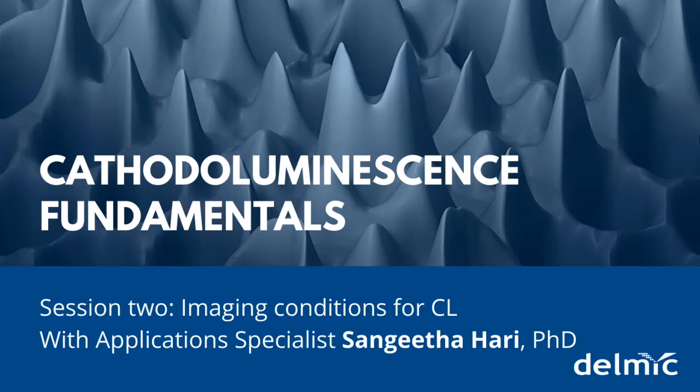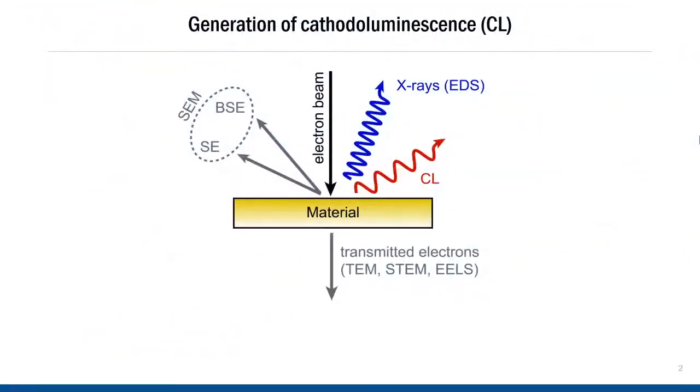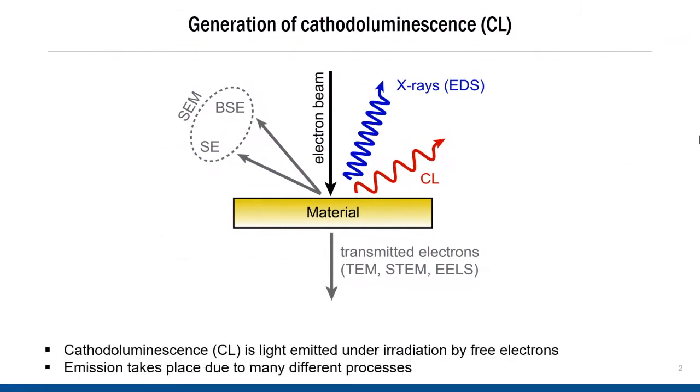Welcome to this webinar. Let me start by a brief introduction to what cathodoluminescence is. Cathodoluminescence or CL is light that is emitted under irradiation by free electrons. If you look at this image here on the screen, when you have a high energy electron beam interacting with the material, the electrons in the primary beam enter the material and penetrate to a certain extent. Throughout this depth, they have a range of interactions with the atoms and molecules in the material. As a result of this interaction, you can get different kinds of processes taking place.